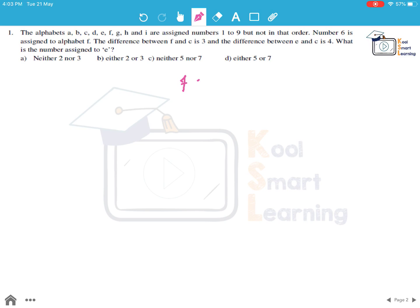So what is given in the question is F is given the number 6. The difference between F and C is given to be 3. So we can say C is equal to F plus minus 3. So it could be either 6 plus 3 is 9 or 6 minus 3 is 3. Now E, difference between E and C is given to be 4. So this means if we take C equal to 9, then E is 9 plus minus 4. So if we say 9 plus 4, it becomes 13 which is not an option because they are assigned number 1 to 9. So 9 minus 4 will be 5. So this is one option.